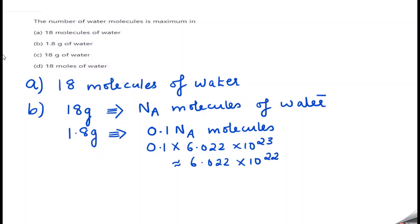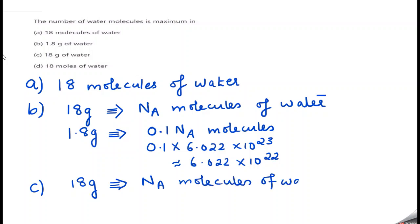Comparing so far: option A has only 18 molecules, while option B has 6.022 × 10²² molecules — that is very huge. Now option C gives us directly 18 gram of water. Since 18 grams is the molecular mass of water, it always contains Nₐ molecules, which is 6.022 × 10²³ molecules. So option C is higher than option B.